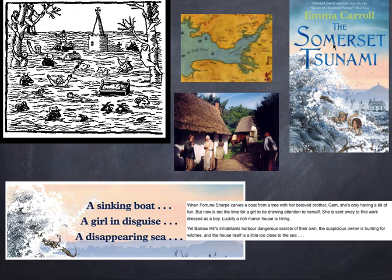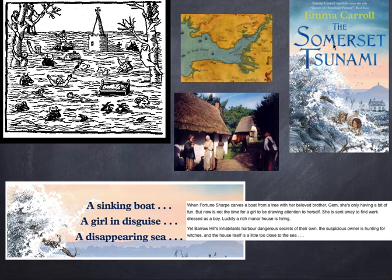Here's a very short synopsis: 'When Fortune Sharp carves a boat from a tree with her beloved brother Jen, she's only having a bit of fun — but now is not the time for a girl to be drawing attention to herself. She's sent away to find work, and luckily a rich manor house is hiring. Yet Barrow Hill's inhabitants harbour dangerous secrets — the suspicious owner is hunting for witches.' The house is a little too close to the sea.